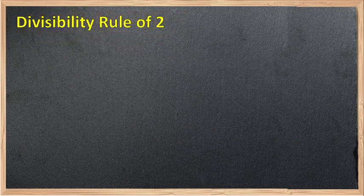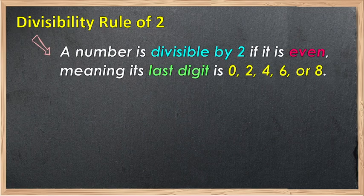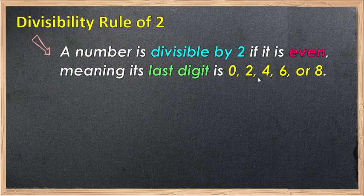Now, let's focus on the divisibility rule of 2. A number is divisible by 2 if it's even, meaning if the last digit is 0, 2, 4, 6, or 8.